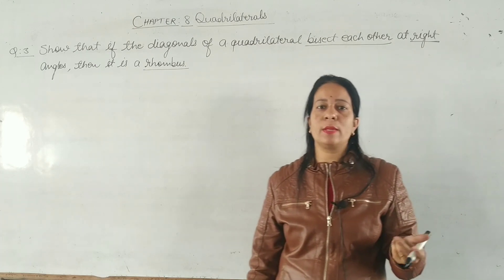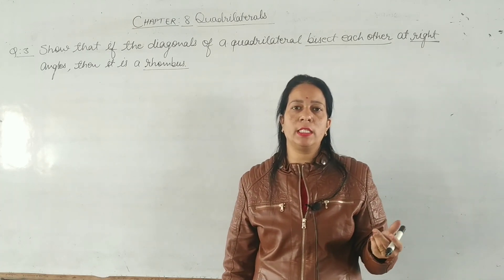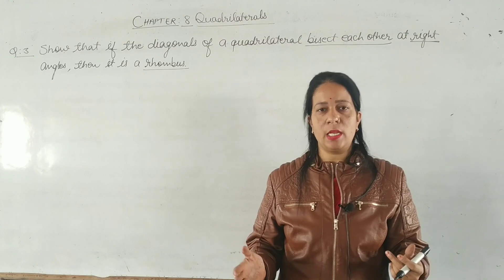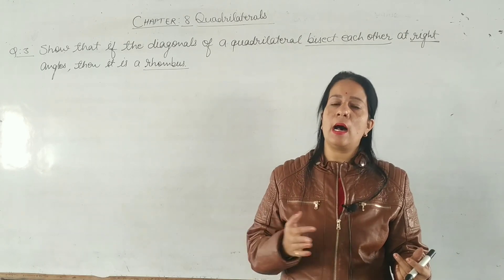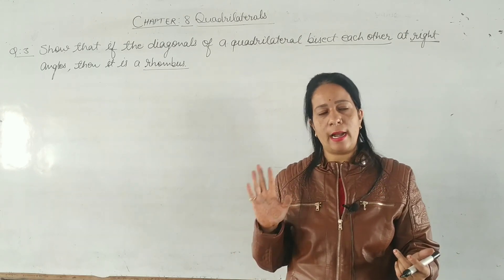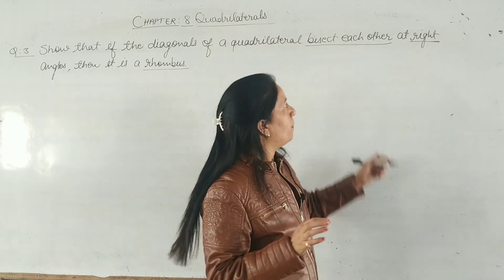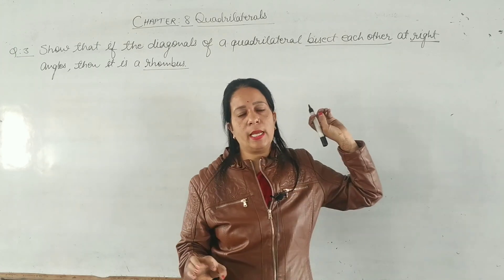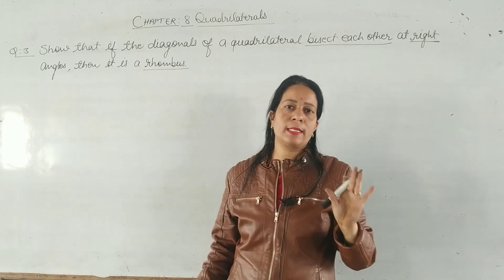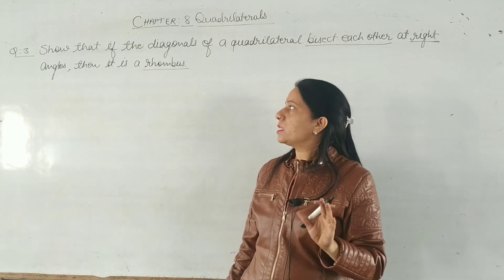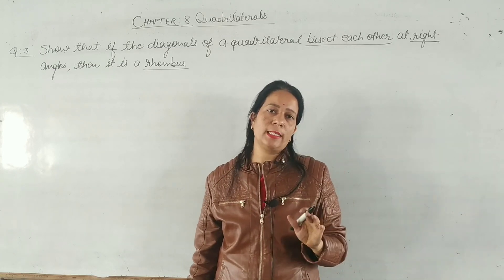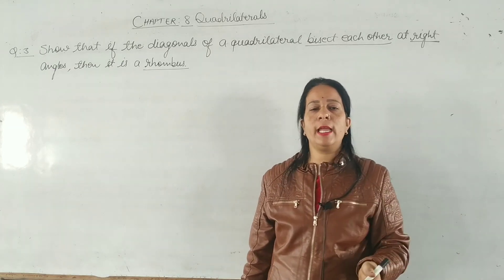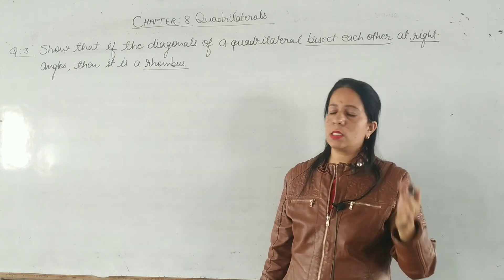We need to know the properties of a rhombus. All sides are equal, and the diagonals bisect each other at right angles. That means we already have one property given. We need to show all sides are equal to each other, and then we can say the quadrilateral is a rhombus.